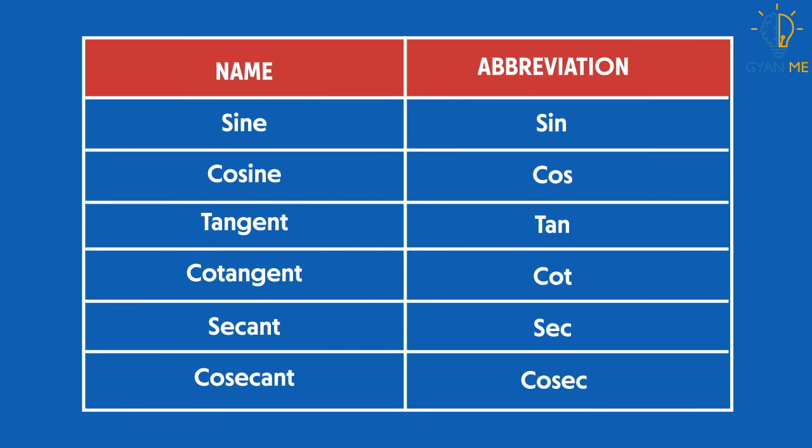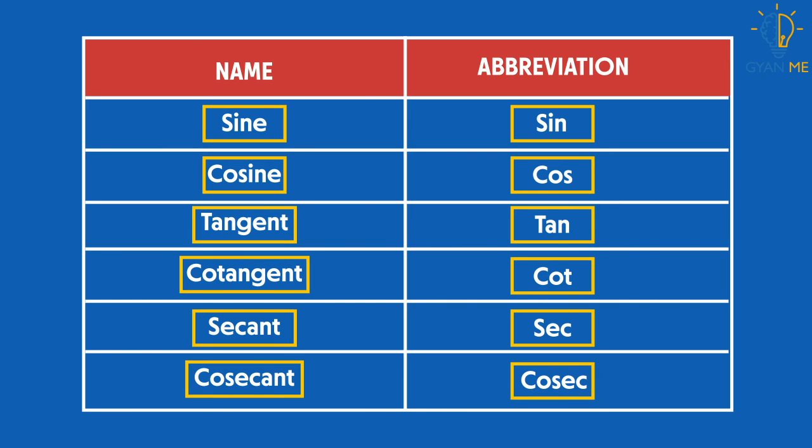Okay, now moving ahead students. Sine is an abbreviation for sine. Cos is an abbreviation for cosine. And tangent is an abbreviation for tan. While these three reverse ratios are also similarly abbreviated for cosecant, secant, and cotangent.